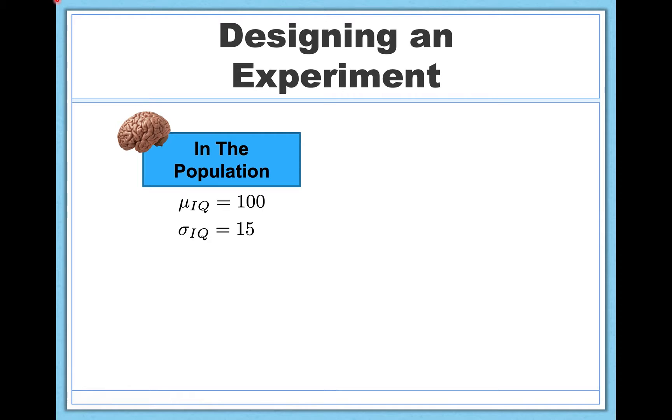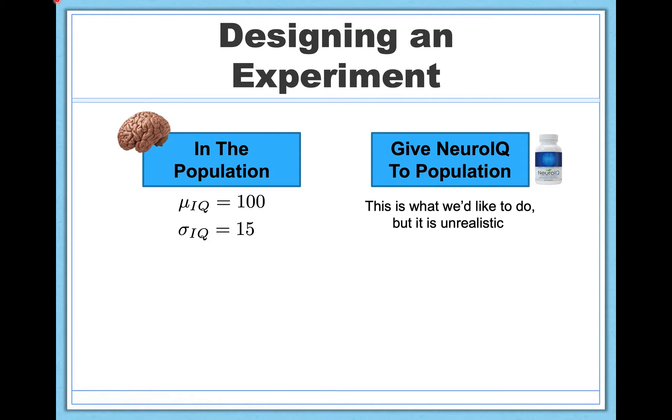Now, if I wanted to test the question on the previous slide, the best way to do it would be to give NeuroIQ to every single person in the population and then measure every single person's IQ and see if that new population IQ is different than what it used to be. Obviously, this is extremely unrealistic. There's no way we could take everyone in the world and give them the supplement and measure their IQ. So instead, what we do is we collect a sample.